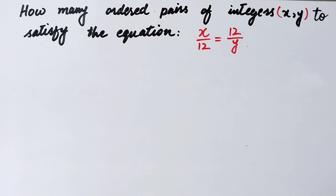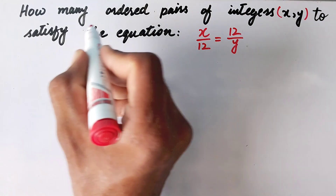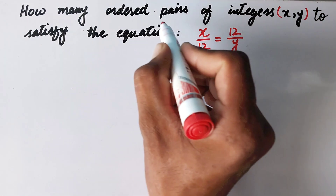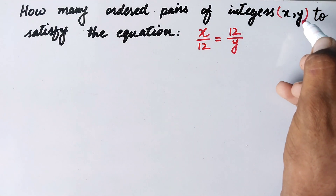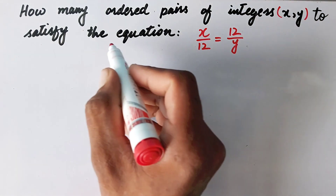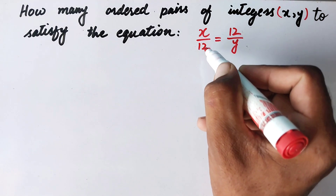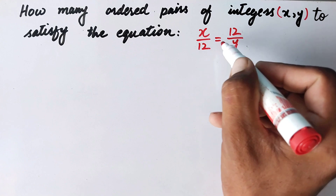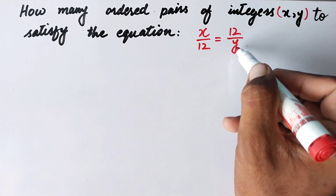Hello everyone, welcome to Explore Math. Today we have the question: how many ordered pairs of integers x, y satisfy the equation x divided by 12 is equal to 12 divided by y?